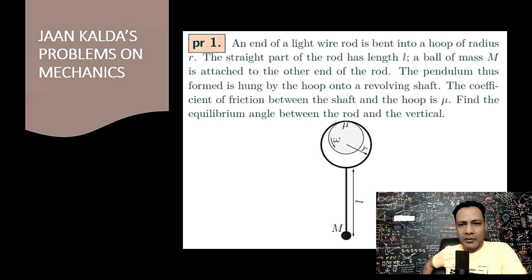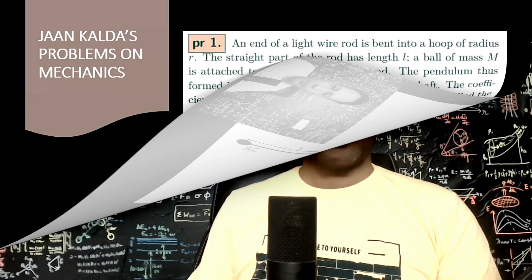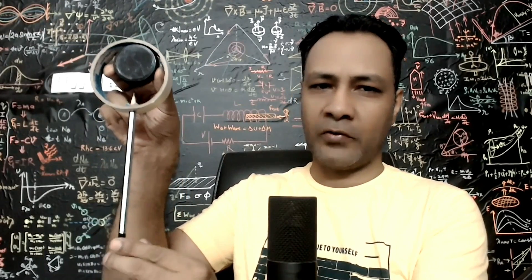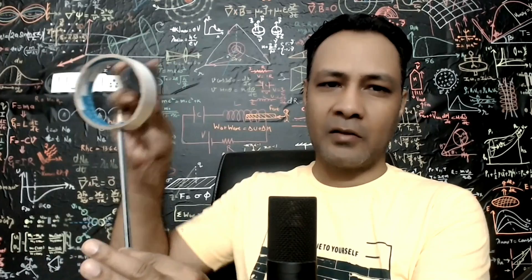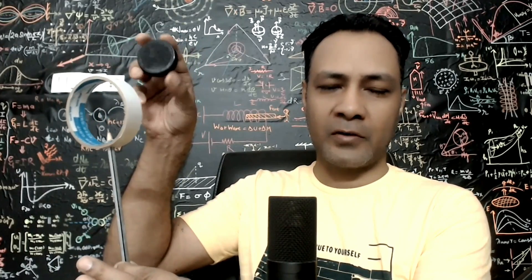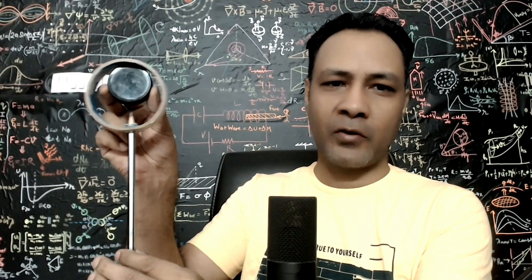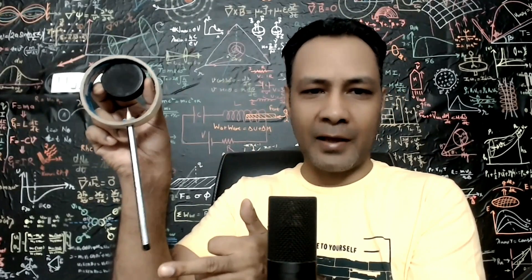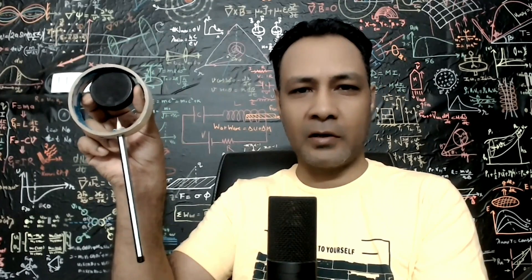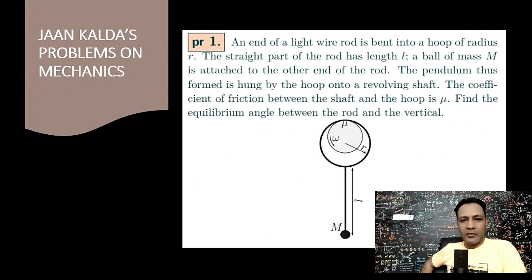Let's understand how the motion is taking place. The arrangement has a hoop and a rod with mass m attached. The shaft is rotating about a fixed axis. Because of the friction between the shaft and the hoop, as the shaft rotates, the whole assembly of the hoop and rod gets tilted. We have to find the angle the rod makes with the vertical in the equilibrium position. Taking the system as hoop, rod, and mass m, the forces are: weight mg, the normal reaction of the shaft on the hoop, and the friction force due to the shaft on the hoop.